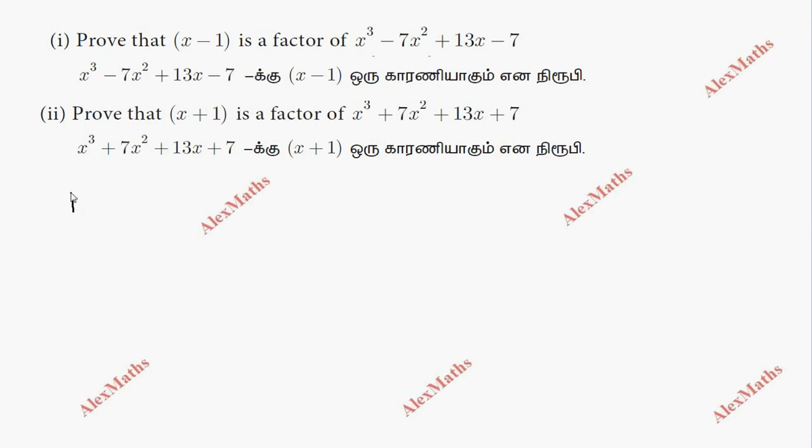It is called P of x. So P of x equals x cube minus 7x square plus 13x minus 7. Here we have sum of coefficients.